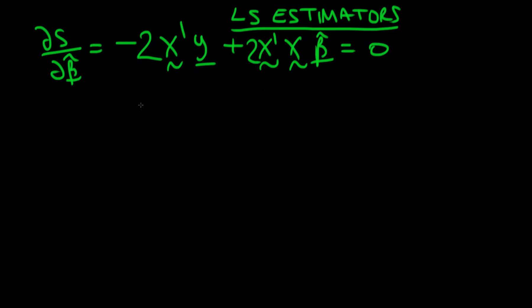At the end of the last video we had this relationship which we'd found for our derivatives of our cost, which in the case of least squared estimators was the sum of square errors with respect to our parameter vector beta hat.